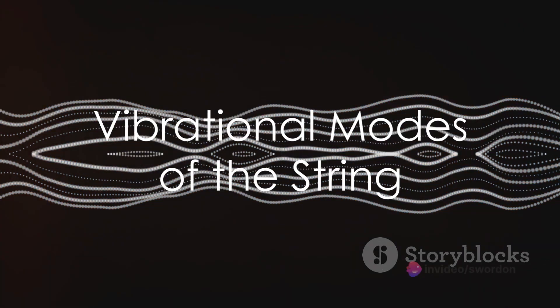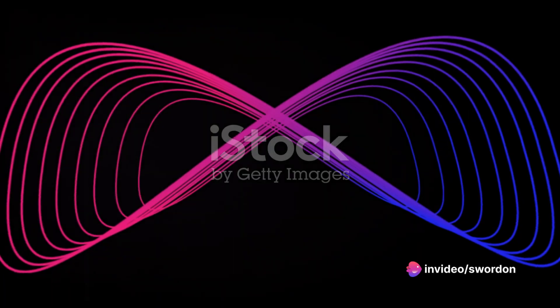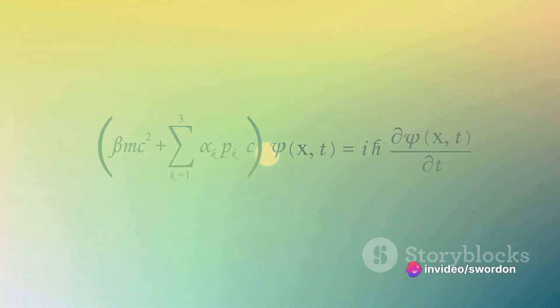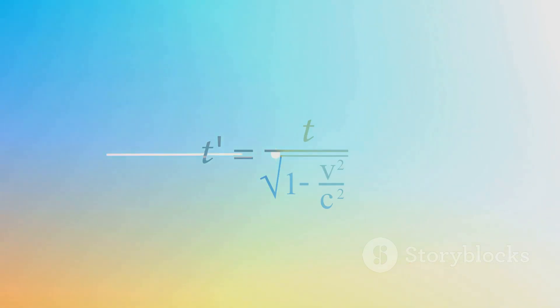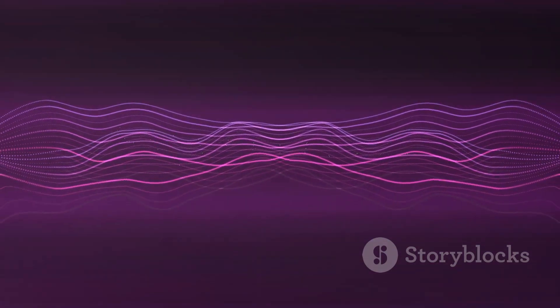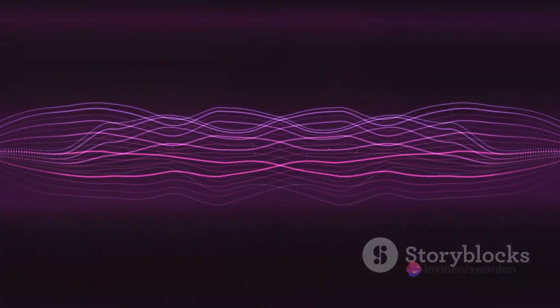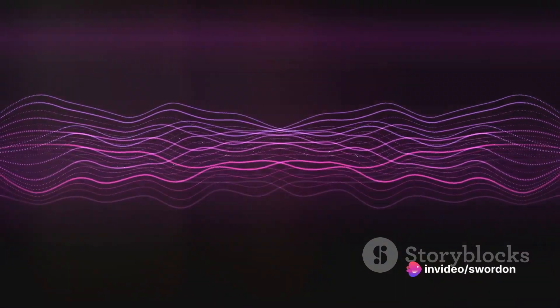Next, we must comprehend the vibrational modes of the string. The vibrational patterns of a string are described by the string wave equation, which is derived from the Pollyakov action. This equation is a two-dimensional wave equation that governs how the string's shape changes over time.